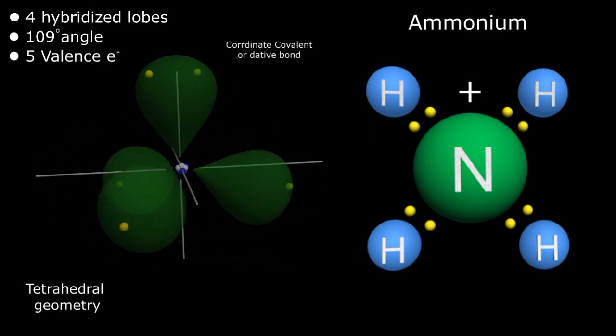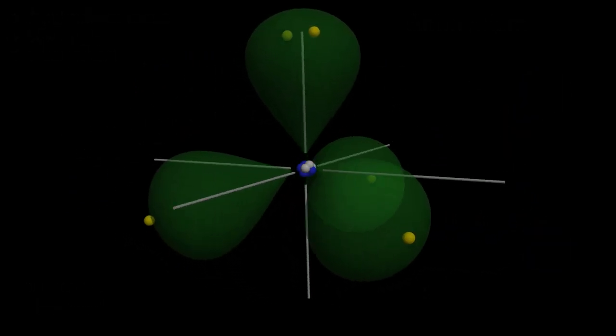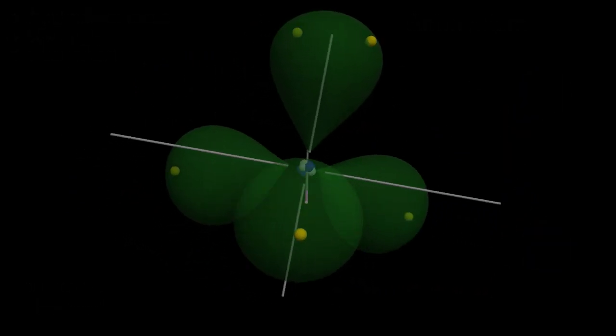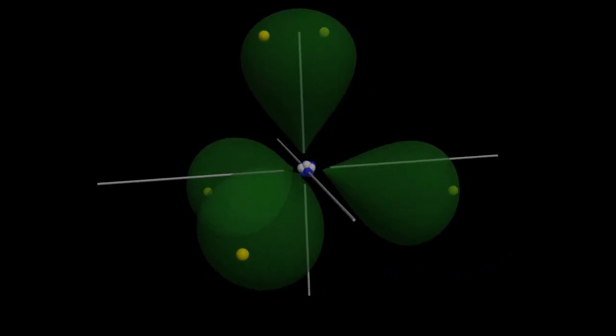Quick summary, but hopefully it helped you understand the variable bonding capabilities of atoms such as nitrogen. If you have any questions, post below. Thanks for watching and we'll see you next time.